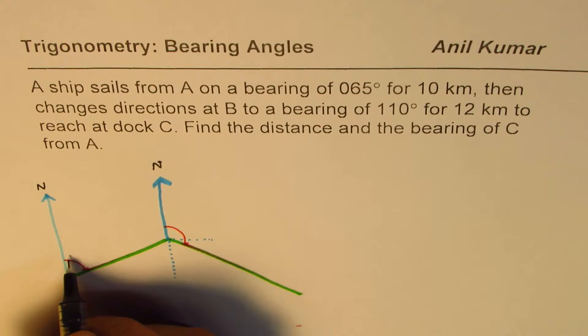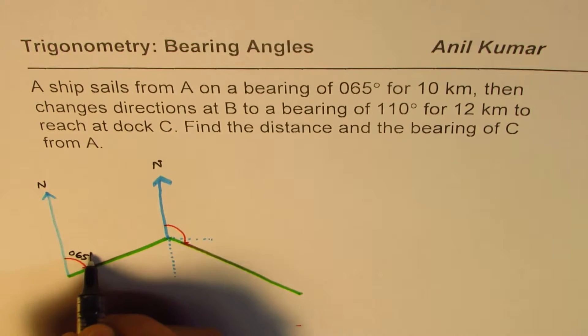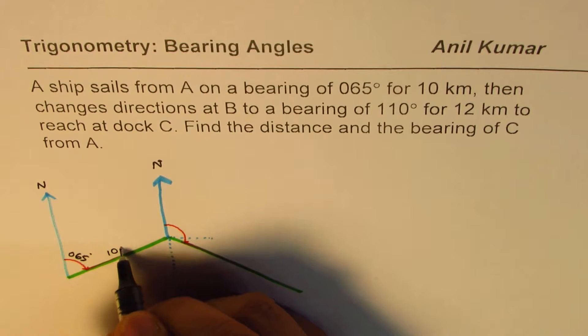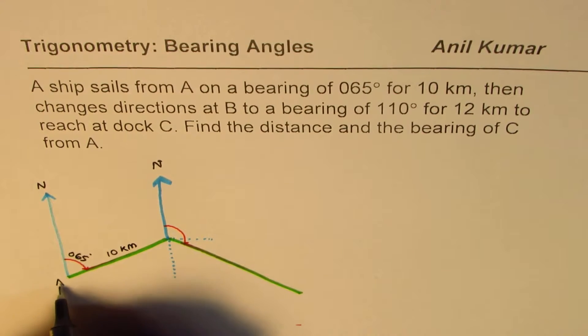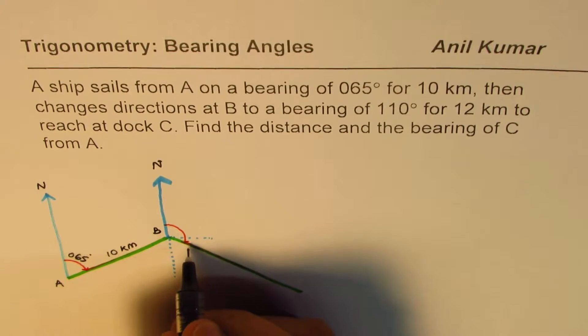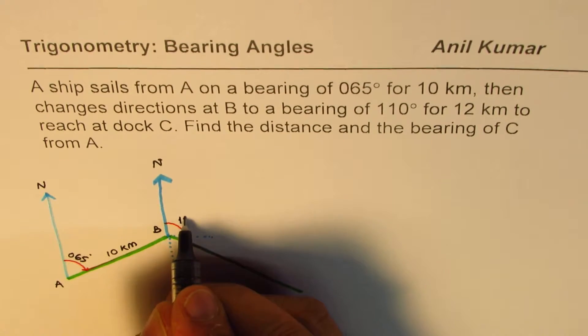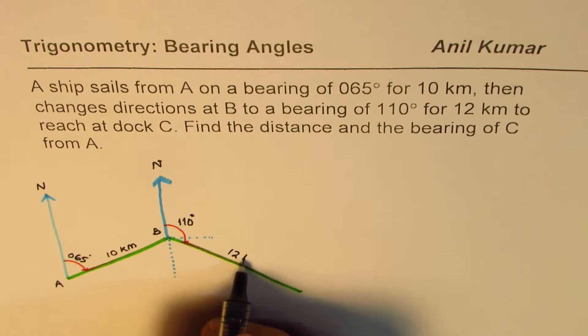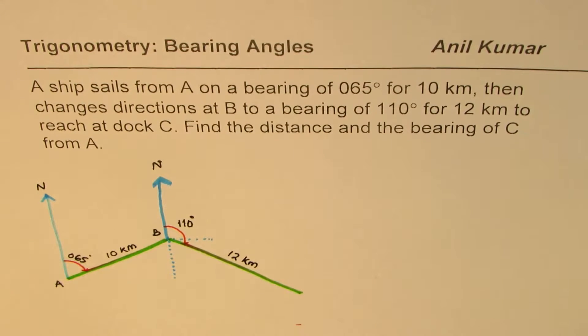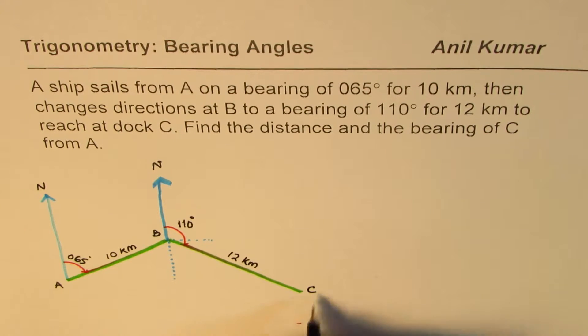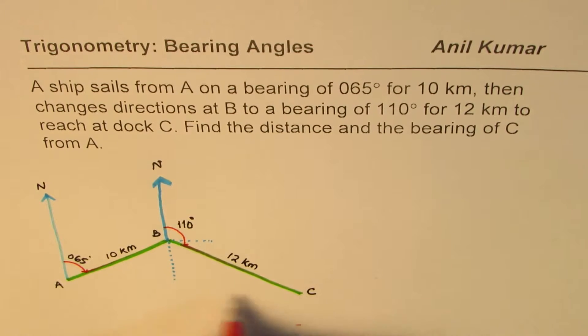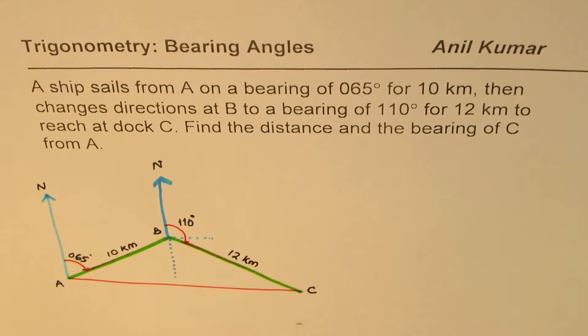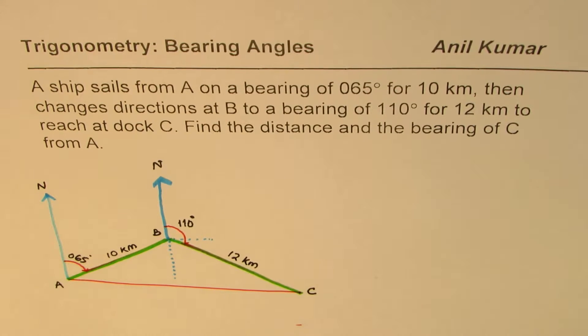So we have the bearing of 65 degrees and the distance is 10 kilometers, this is from point A to B. At B the angle changes to 110 degrees and it goes for a distance of 12 kilometers. We need to find the distance from A to C, the end point C. So let me connect this A to C. This is what we need to find.